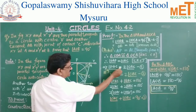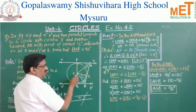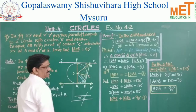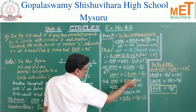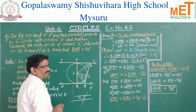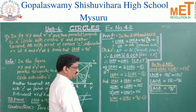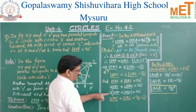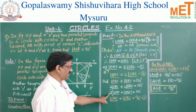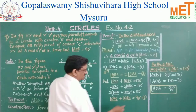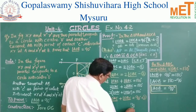Substituting from equations one and two: angle PAC = 2 × angle OAC and angle QBC = 2 × angle OBC. So 2(angle OAC + angle OBC) = 180 degrees. Taking 2 as a common factor: angle OAC + angle OBC = 90 degrees.